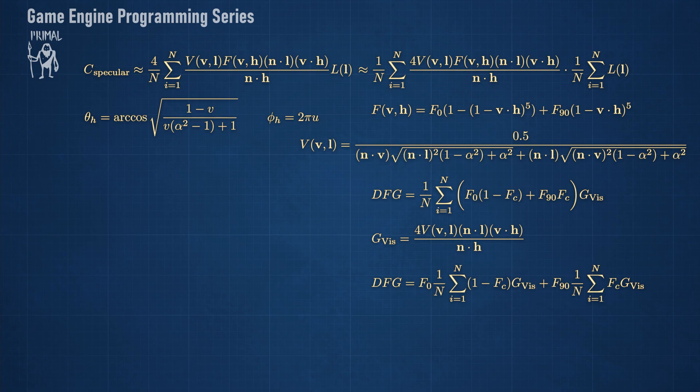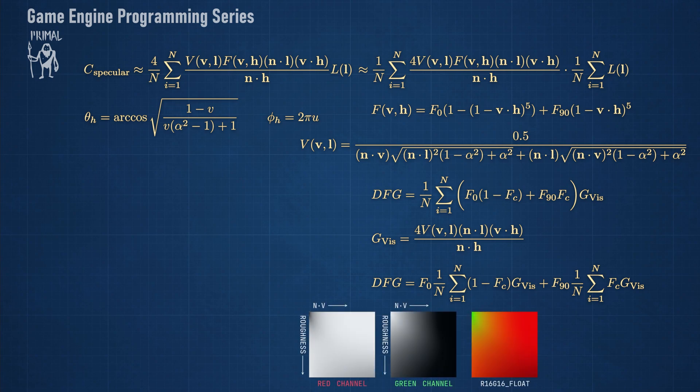Each sum has two inputs, which are the roughness and the cosine of the angle between the view vector and the normal direction. We can store the results in the red and green channels of a texture in a half-precision floating point format. Here we can see what this texture looks like.